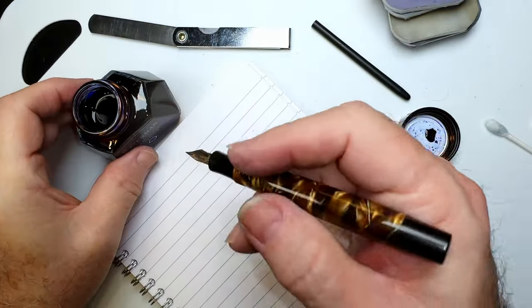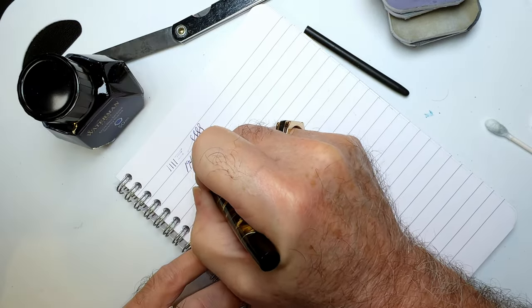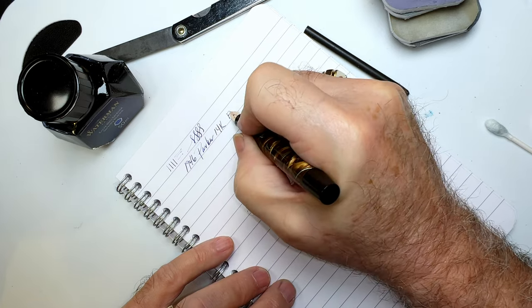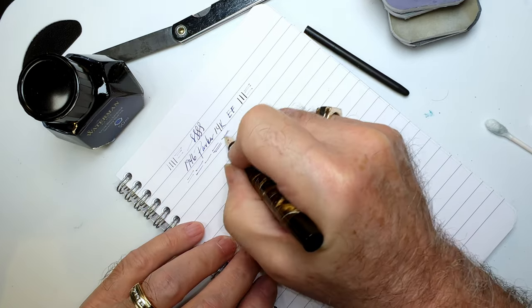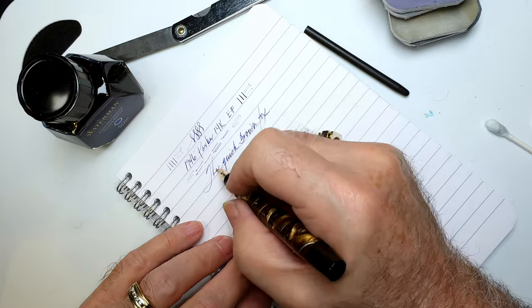Now I'm just going to dip test the nib before I put the sack in. 1946 Parker 14 karat gold. I'd say extra fine. And it still needs some alignment. It's okay that way, but it's scratchy that way. But it's writing.